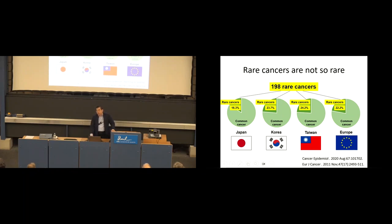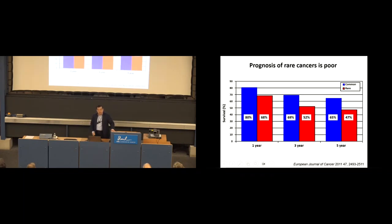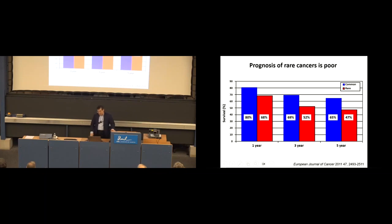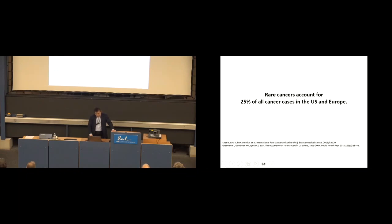Although the total number of rare cancer patients is not small, because the number of individual rare cancers is very small, the prognosis of patients in this field is quite poor, because treatment options for individual rare cancers are quite limited. This slide demonstrates that survival rates at one year, three years, and five years are always shorter for rare cancer patients than for common cancer patients. According to statistical studies in the United States and Europe, approximately 20% of all cancer deaths are attributable to rare cancers.